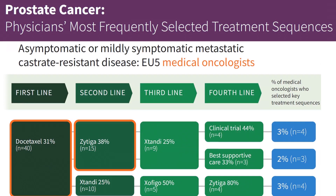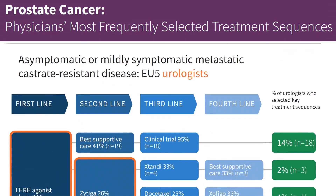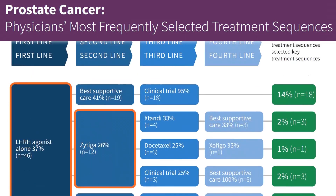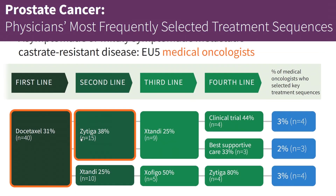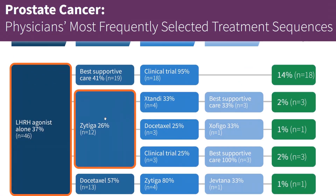In the first example, in asymptomatic patients, Zytiga is the second most frequently prescribed first line treatment among both oncologists and urologists. But the sequence is different according to specialty type. Among oncologists, Zytiga is most commonly prescribed after docetaxel. But according to urologists, Zytiga is most commonly prescribed in the second line after LHRH agonists.